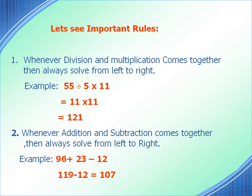Now let's see some important rules while evaluating an expression using PEMDAS. First rule: whenever division and multiplication comes together, then always solve from left to right. For example, 55 ÷ 5 × 11 is not 55 ÷ 55, but rather 11 × 11, because going from left to right you get to the division first.